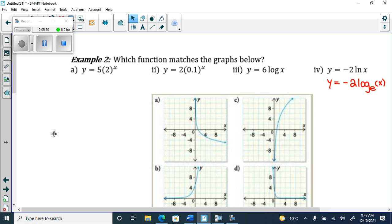So 5, base 2 to the x, and 2, base 0.1 to the x. What is 1 and 2? What kind of graphs are these? Exponential. They're exponential graphs. So this tells me it's a what? What is that? Y-intercept at 0, 5. And what does this tell me? What does the 2 tell me? Increasing.